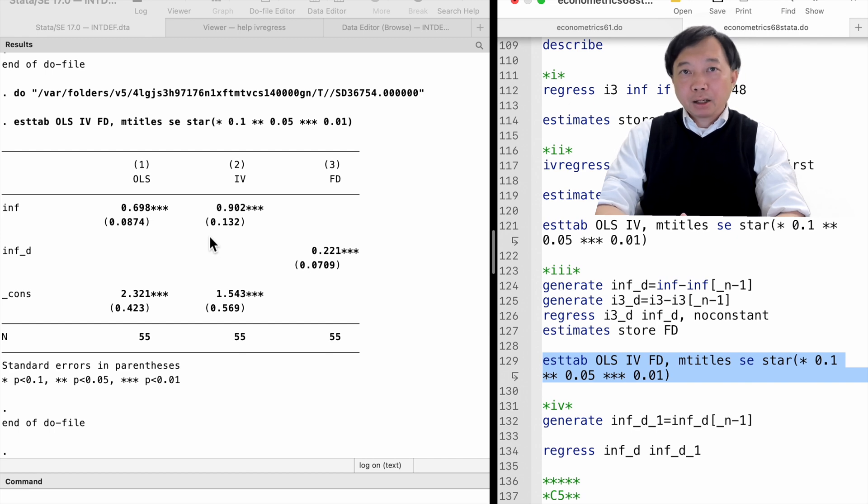So, after eliminating them by first differencing, the estimate becomes smaller. On the other hand, some omitted factors may cause the OLS estimate to be downward biased and they are not correlated with the past inflation rate. So, after using the past inflation rate as an IV, the estimate becomes larger.